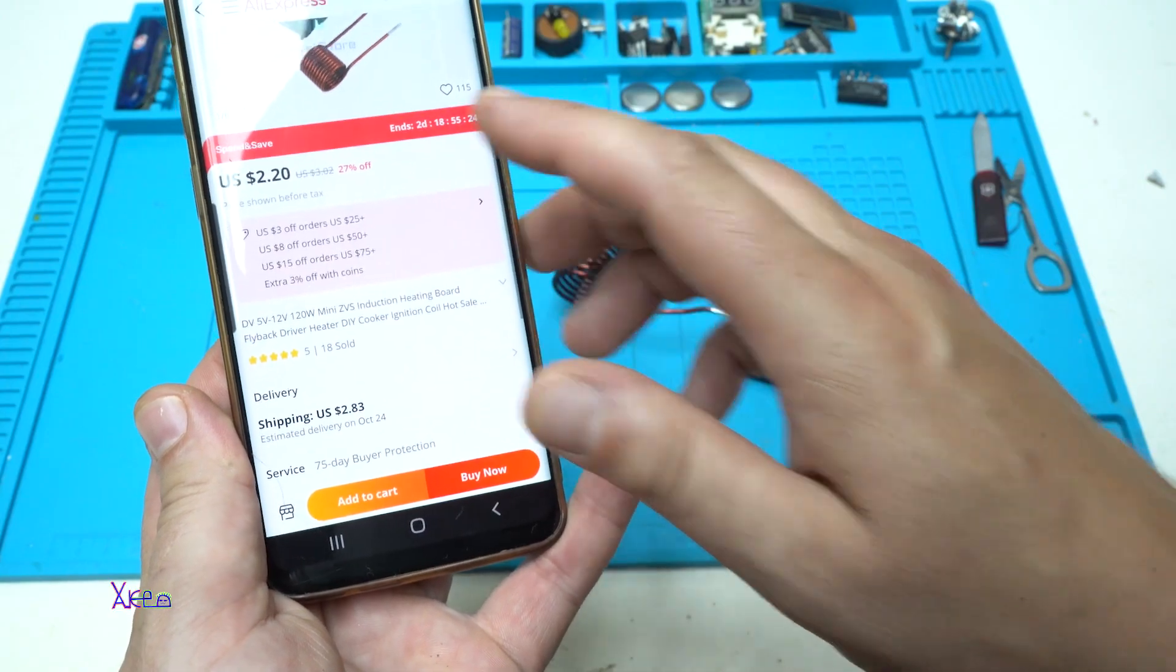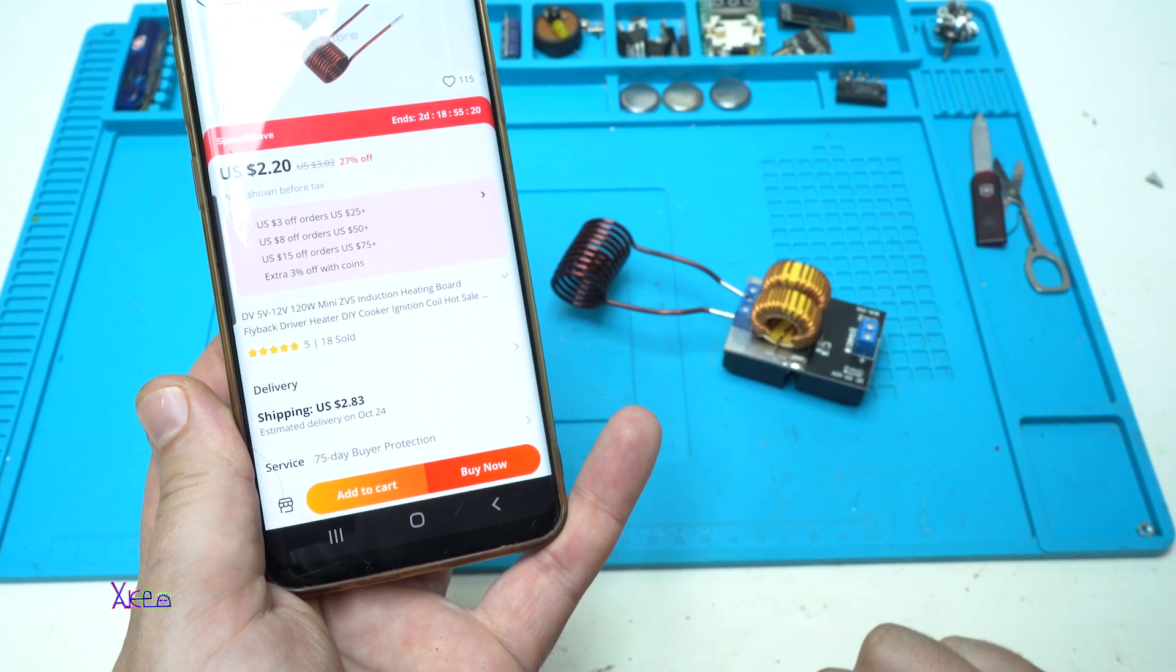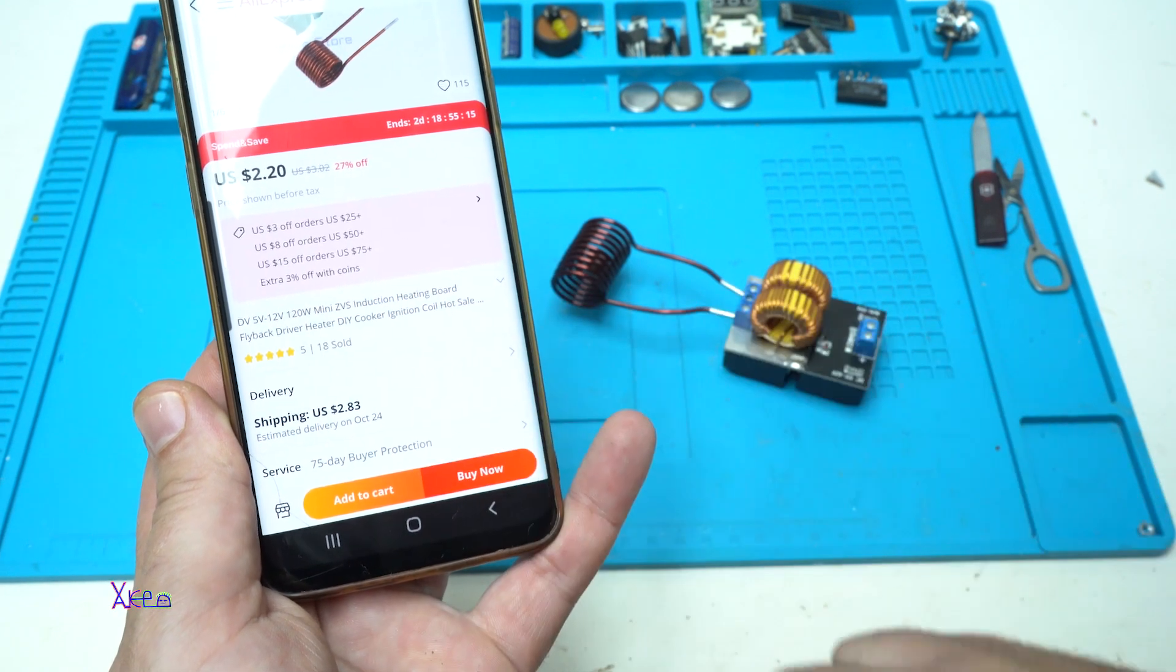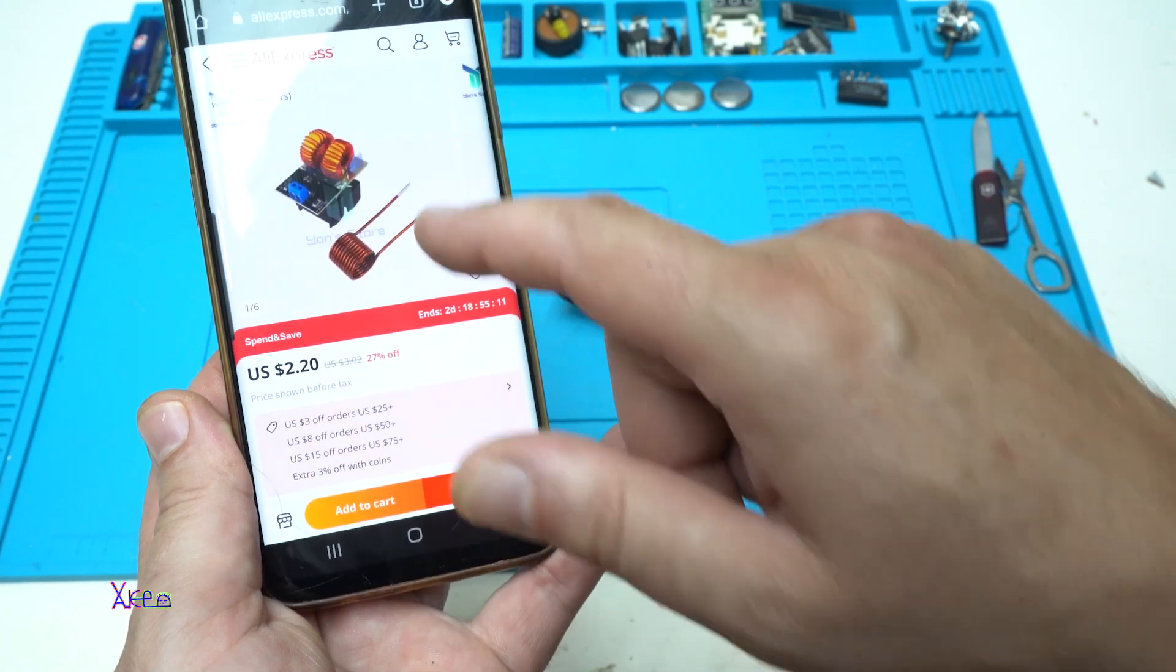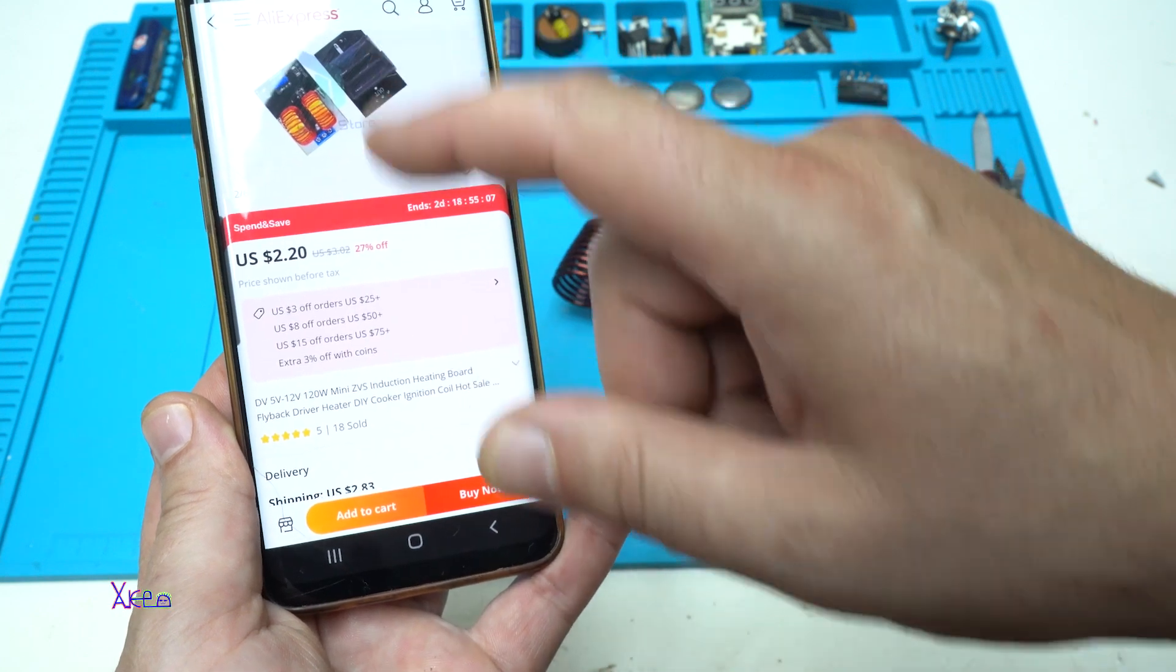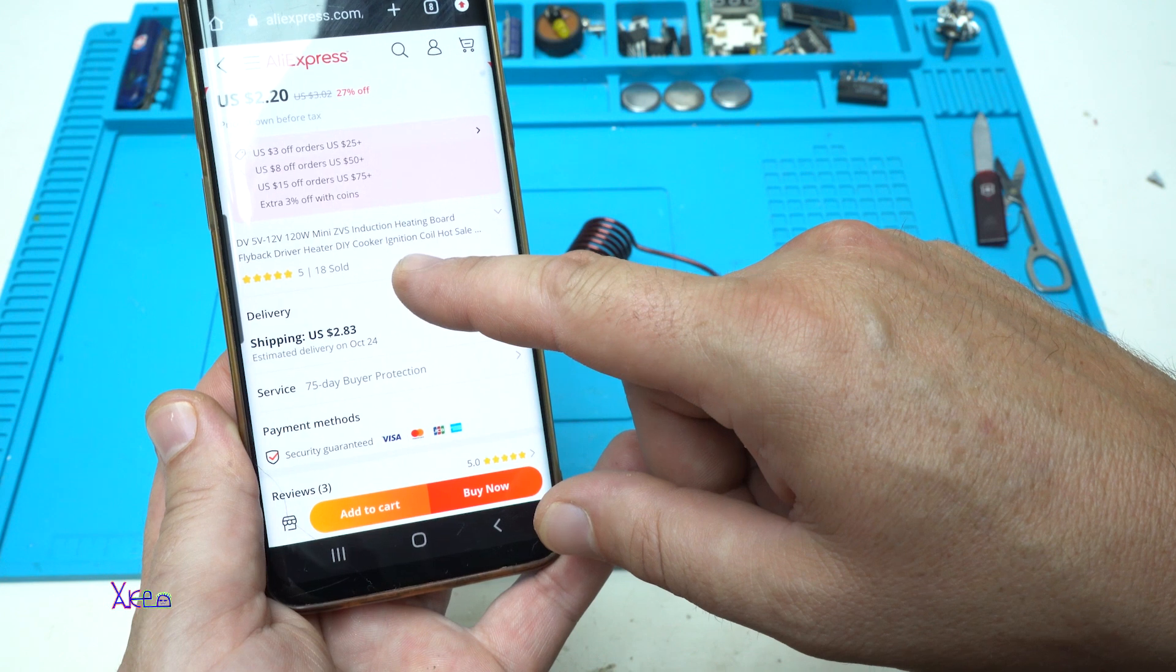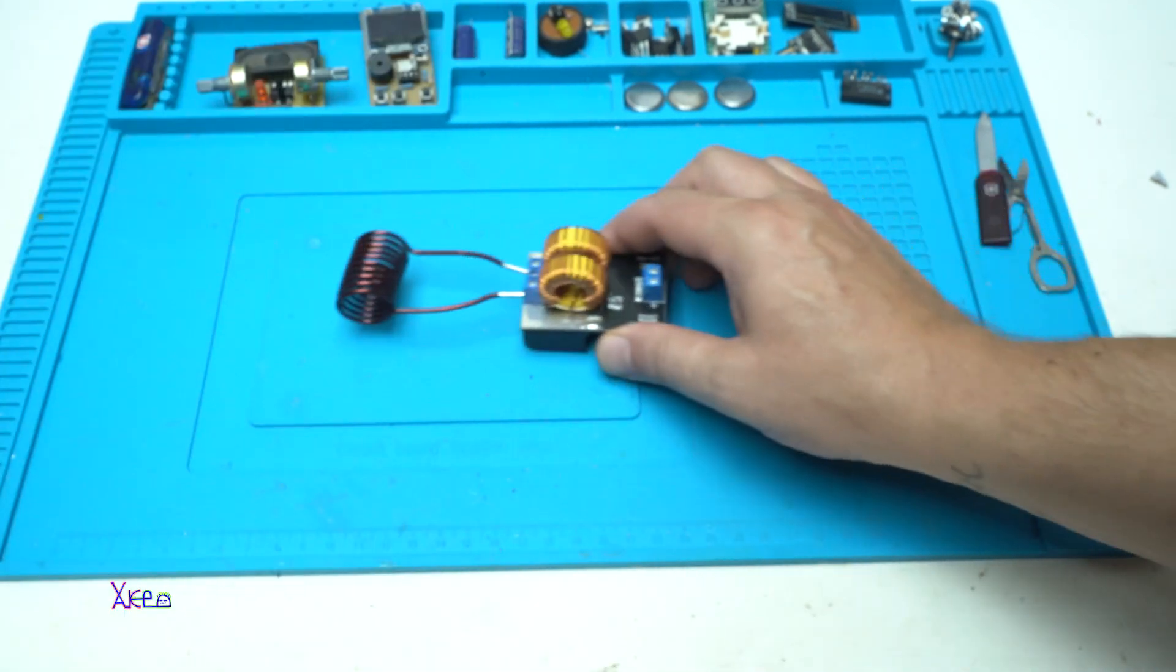It's an induction heating board that works from 5 volts up to 12 volts, 120 watts mini induction heating board from Aliexpress, and this cost $2.20 to order plus $2.83 for shipping. And here it is.